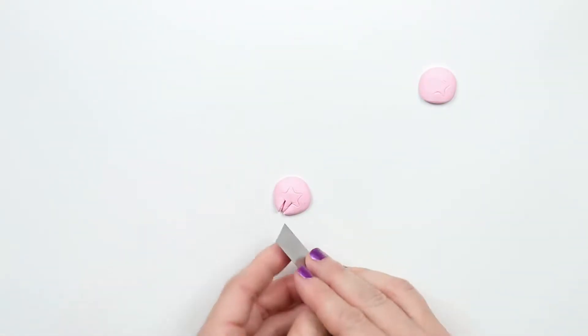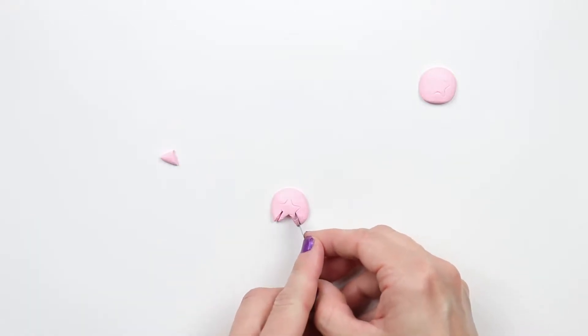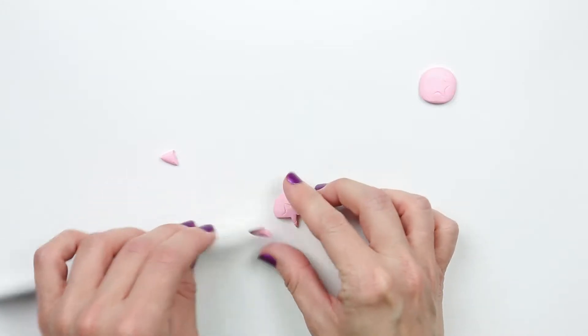Use your tissue blade and cut out the shape of the star. If you have a star shaped cutter that's large enough you can go ahead and use that. Mine's just really small.